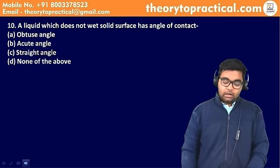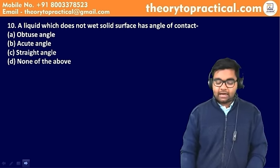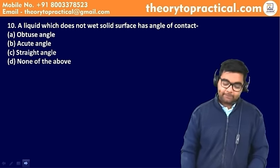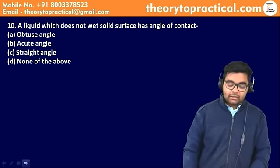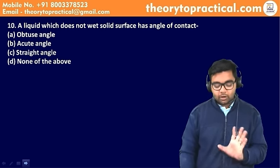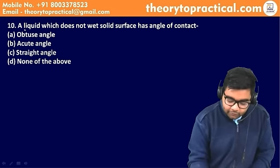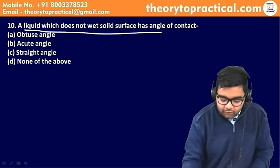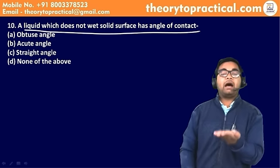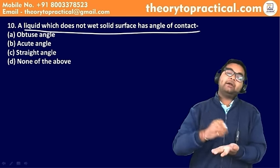अगला question: a liquid which does not wet the solid surface has angle of contact — जैसे mercury, जो surface को wet नहीं करता, एक ball की shape लेता है।